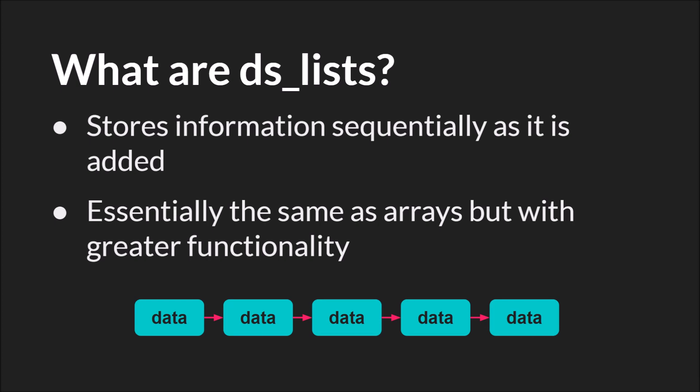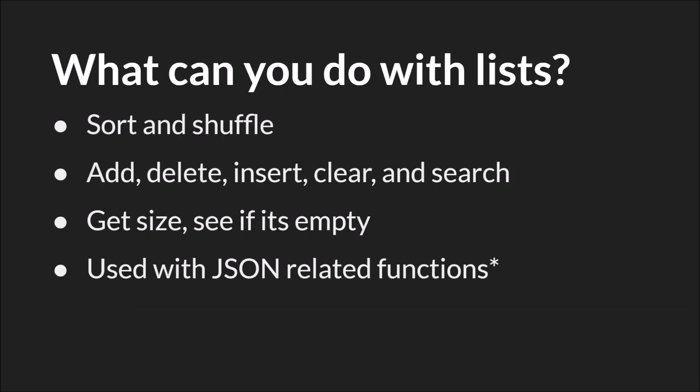Like an array, but with a data structure one of the key parts is how you interact with it. With lists you get a bunch of advanced functionality. Specifically with a DS list you can sort and shuffle. You can add, delete, insert, clear, and search. You can get the size, see if the list is empty, and on top of that you can use them with JSON functions. They're one of the two data structures — the other being DS maps — that you can use with JSON-related functions to load or save data in and out of your game.